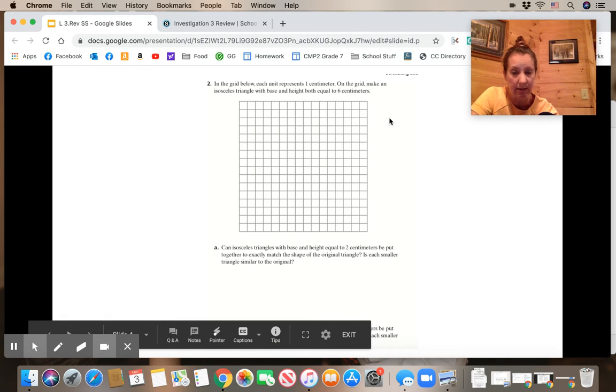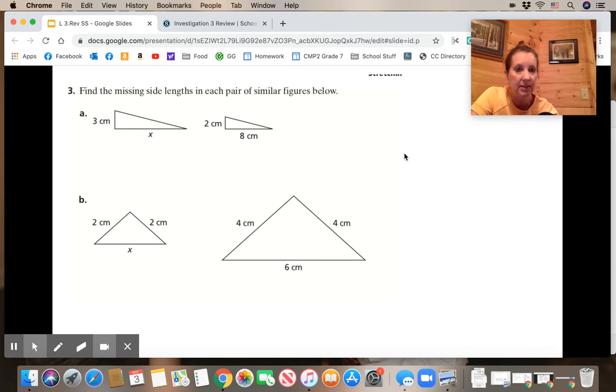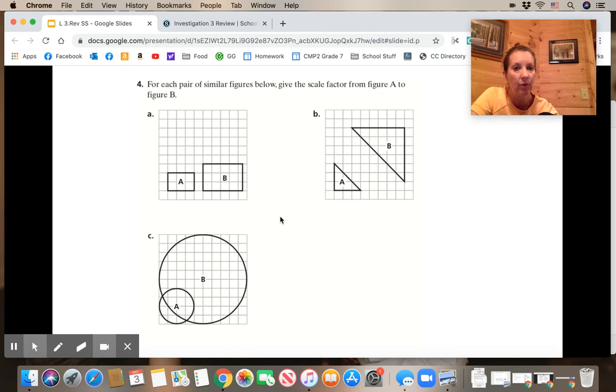Question 3 says find the missing side lengths in each pair of similar triangles. So again, they're telling you they're similar. Find the missing length in 4. For each pair of similar figures, give the scale factor from a to b. So they're telling you they're similar, give the scale factor from a to b.